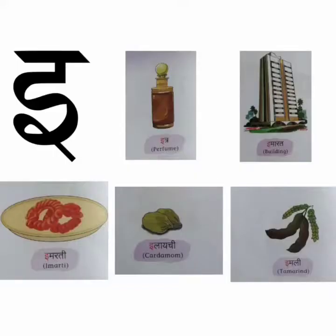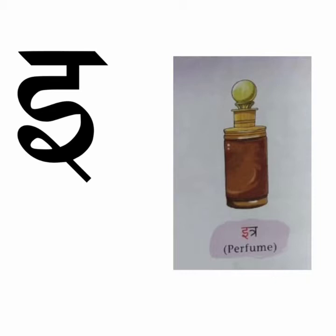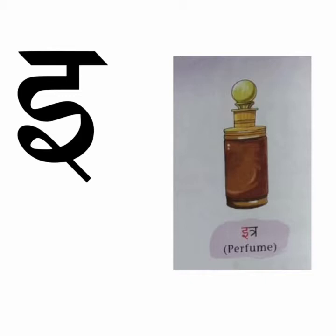Let's see. E. E say itra. E say imarat. E say imarti. E say ilaichi. E say imli. E say itra — itra means perfume. Perfume is fragrant. E say imarat — imarat means building. We see buildings all around us.